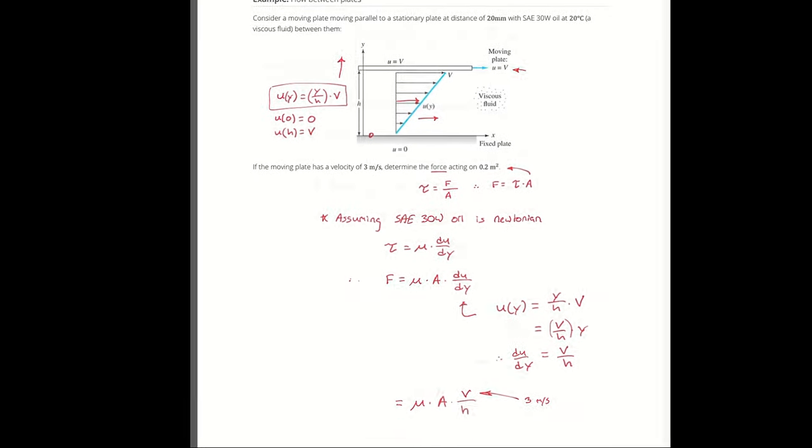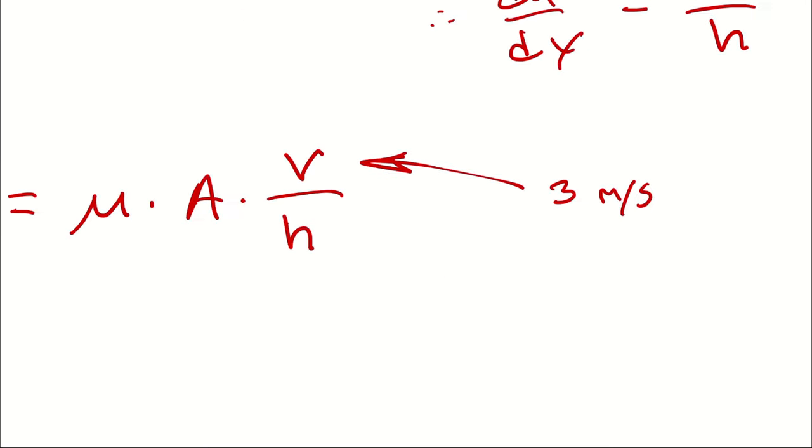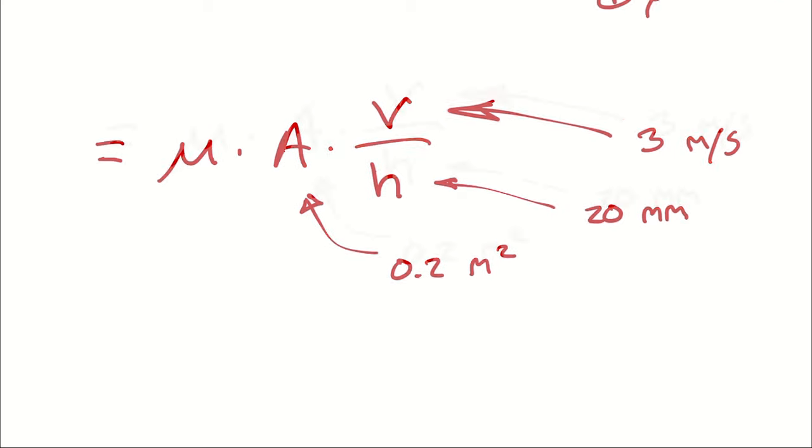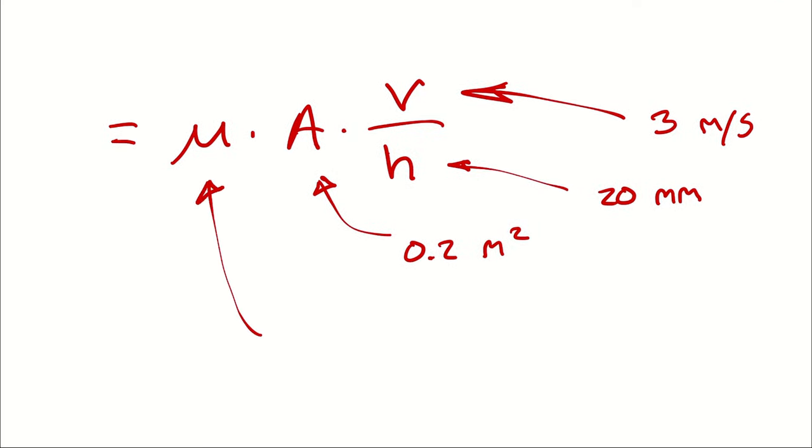I know h. It was 20 millimeters. I know A. That was 0.2 square meters. So the only unknown is the dynamic viscosity of SAE 30-weight oil at 20 degrees Celsius.